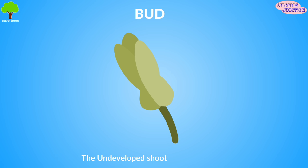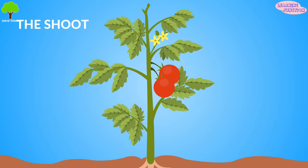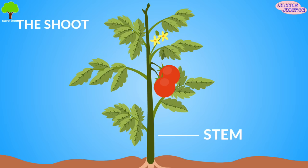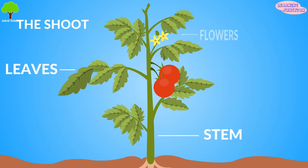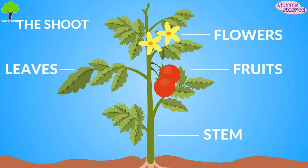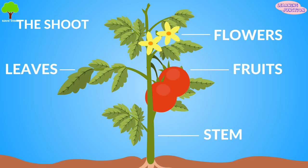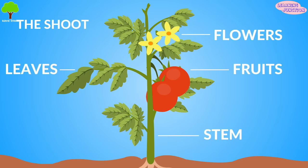The undeveloped shoot is called the bud. The shoot has different parts called the stem, leaves, flowers, and fruits. Let's learn about each part one by one.